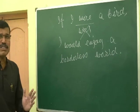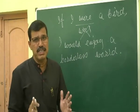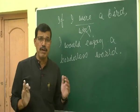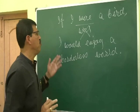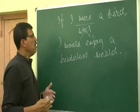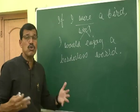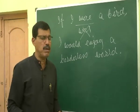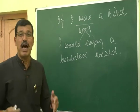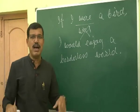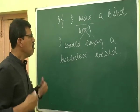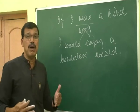Past subjunctive always indicates an imaginary or a hypothetical situation. Actually, I am not going to be a bird. How can I be a bird? I don't have wings, I don't have a tail, I can't fly. So I just imagine.